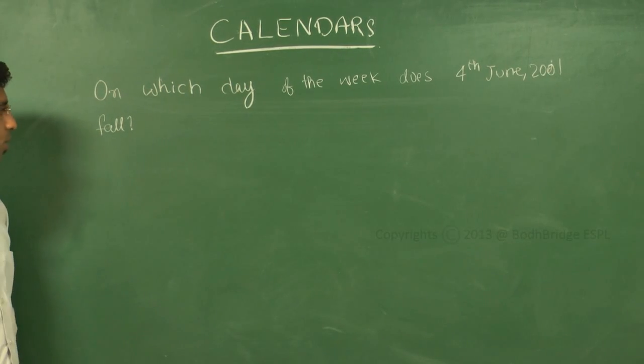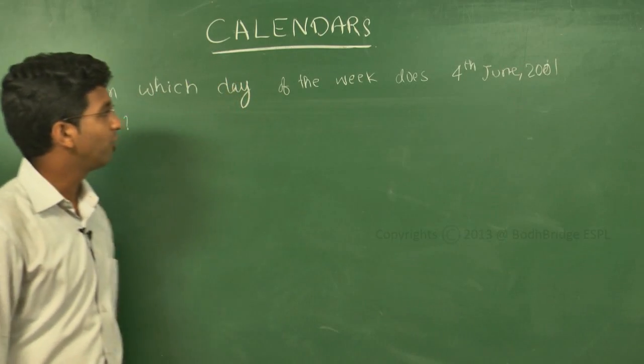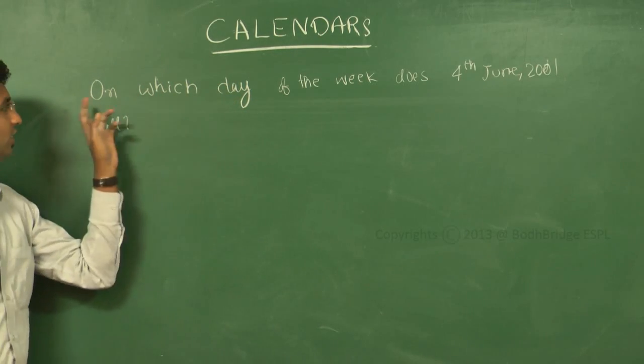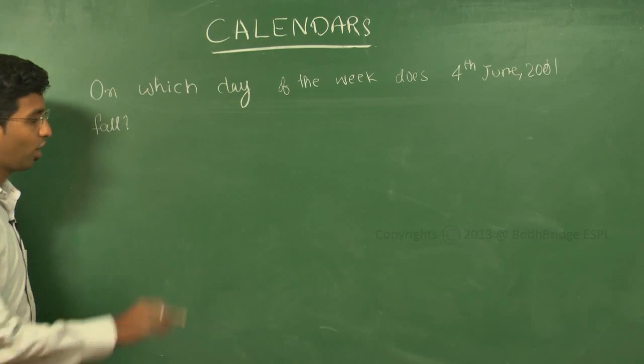Coming to one more problem: only one date will be given and we have to find which day it will fall on. On which day of the week does 4th June 2001 fall? So how to do it?